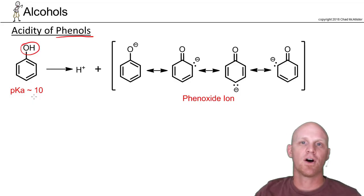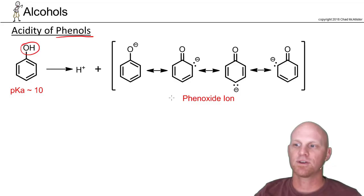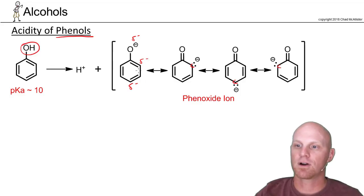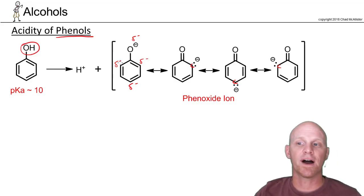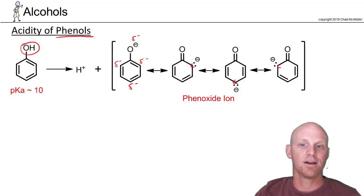We can explain the increased acidity of phenols based on resonance, using the ARIO rules. The conjugate base, phenoxide, actually has four different resonance structures. The oxygen carries a partial negative charge due to resonance, and then specific carbons on the ring — at the ortho and para positions — also share that partial negative charge. Due to resonance, the negative charge is actually shared between four atoms. Oxygen has the majority, but those three carbons help carry the load, making phenoxide more stable than a normal alkoxide, and making phenol more acidic than a regular alcohol.